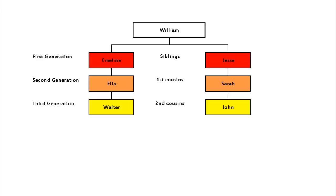Here is William again with the next three generations. Look at Walter and his second cousin John. Walter's daughter Margaret is one generation distant from the second cousin relationship, so she and John are second cousins once removed.